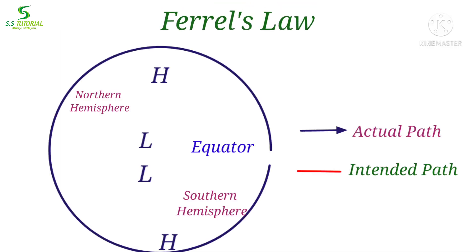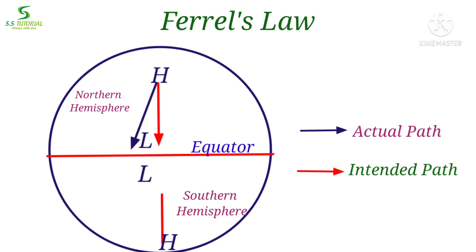In simple words, when winds move from a high pressure zone to a low pressure zone, the wind deflects to the right side in the northern hemisphere and to the left side in the southern hemisphere. This law was first described by William Farrell, and that is why it is known as Farrell's law.